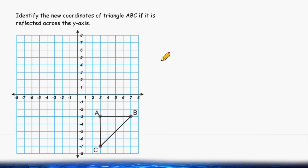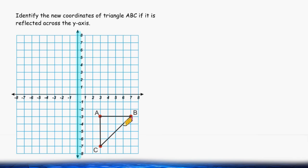In this problem, we have to identify the new coordinates of triangle ABC if it is reflected across the y-axis. So we have to take this triangle right here, triangle ABC, and reflect it across this line right here, which is the y-axis. So we have to flip this triangle across this line.